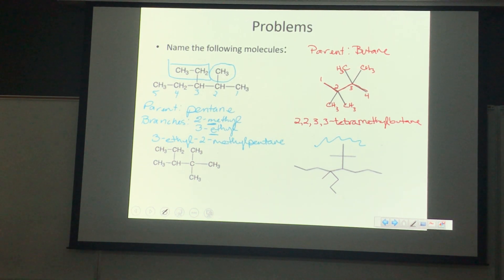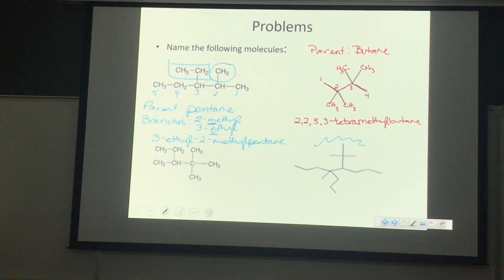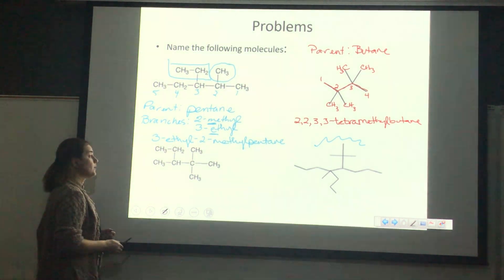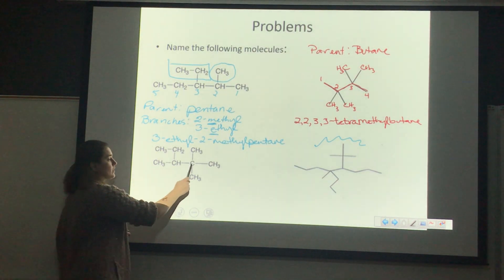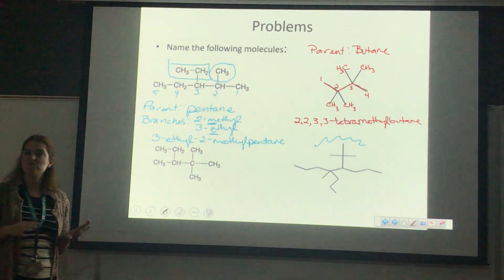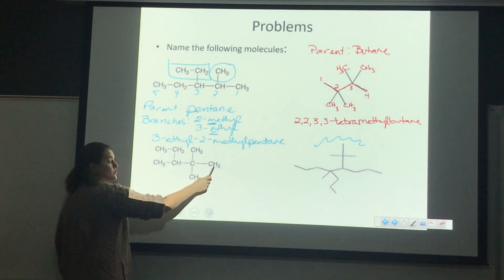If we do this chain, we're going to have two branches here and two branches there — that gives us four branches. If we went a different way, we'd have these two as branches and those two as branches — also four branches. Any way you go, you're going to find four branches. This is a pretty symmetrical little molecule.